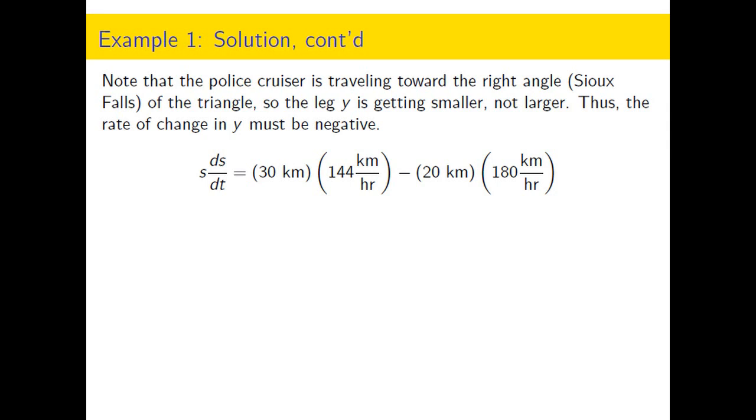So now we just have two unknowns, and they're both right here. The distance between the vehicles and the rate at which that distance is changing.